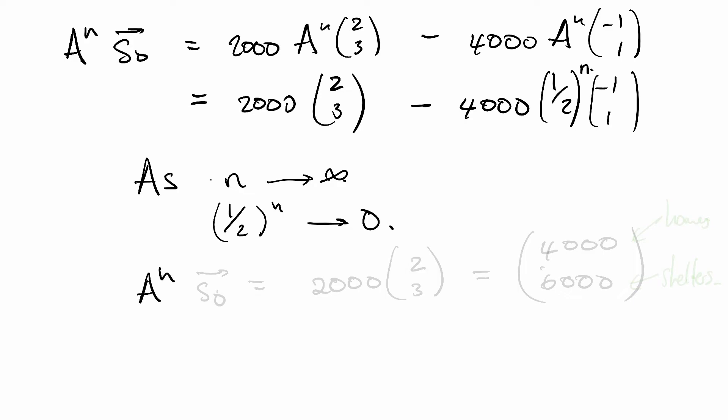And so A^n times the initial state vector is going to go to 2,000 (2,3), which is just 4,000, 6,000. In the long run there are going to be 4,000 puppies in homes and 6,000 puppies in shelters.